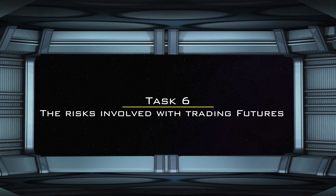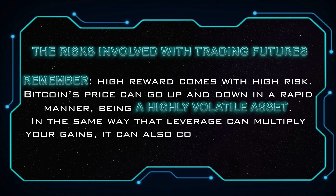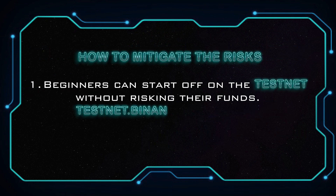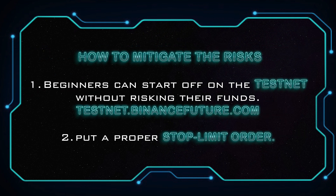Task 6: The risks involved with trading futures. Remember, high reward comes with high risk. Bitcoin's price can go up and down in a rapid manner, being a highly volatile asset. In the same way that leverage can multiply your gains, it can also compound your risks and potential losses. To mitigate the risks, beginners can start off on the testnet without risking their funds. You can also put a proper stop limit order.